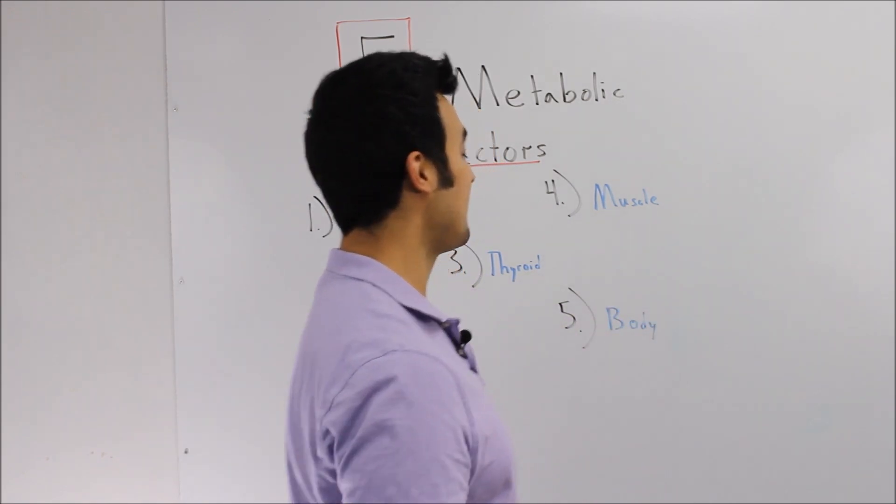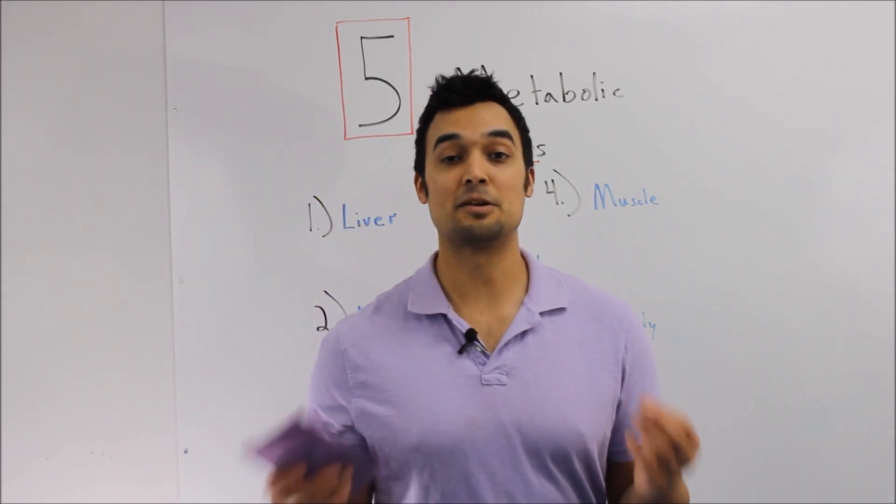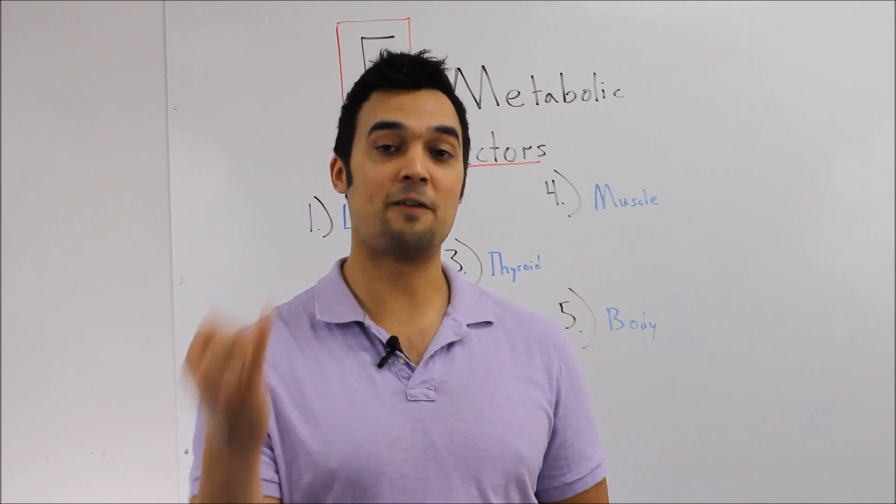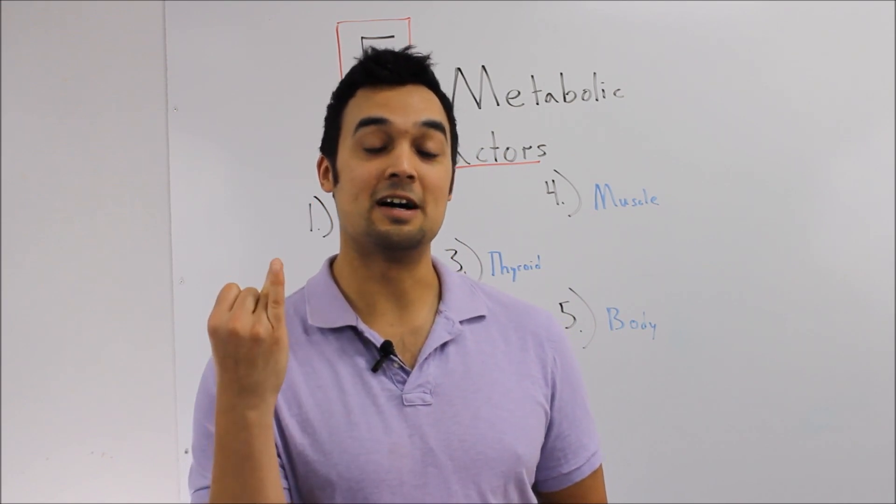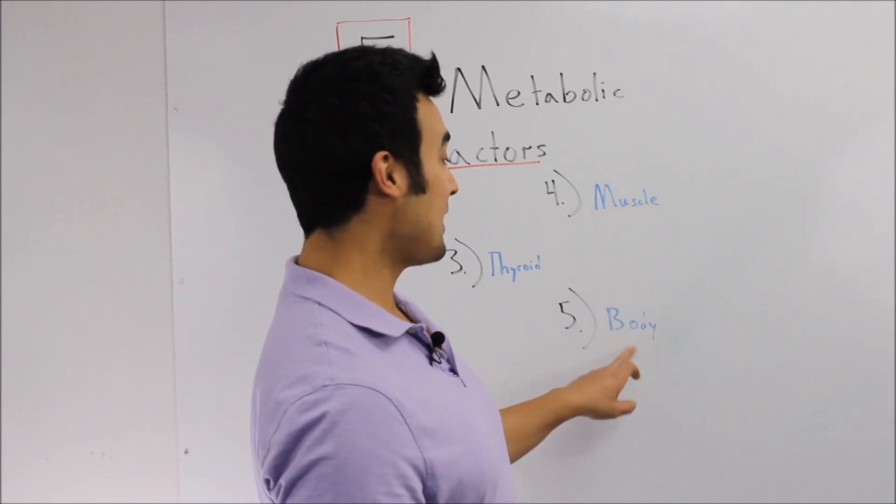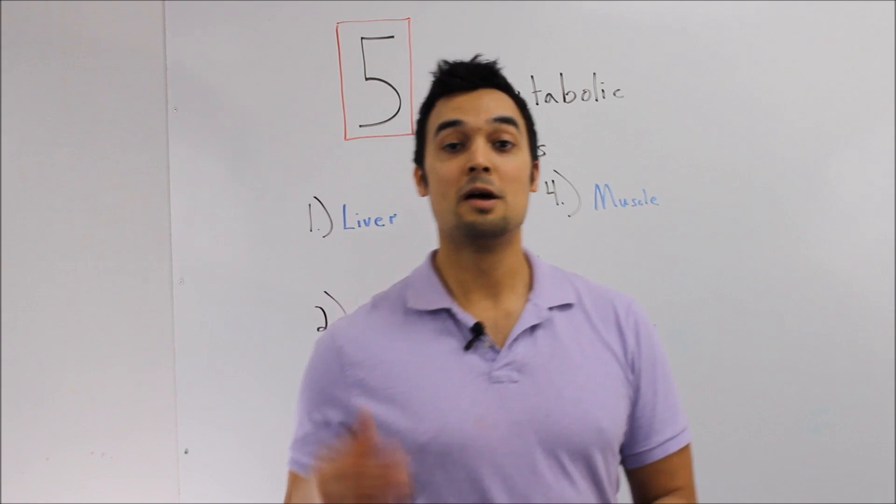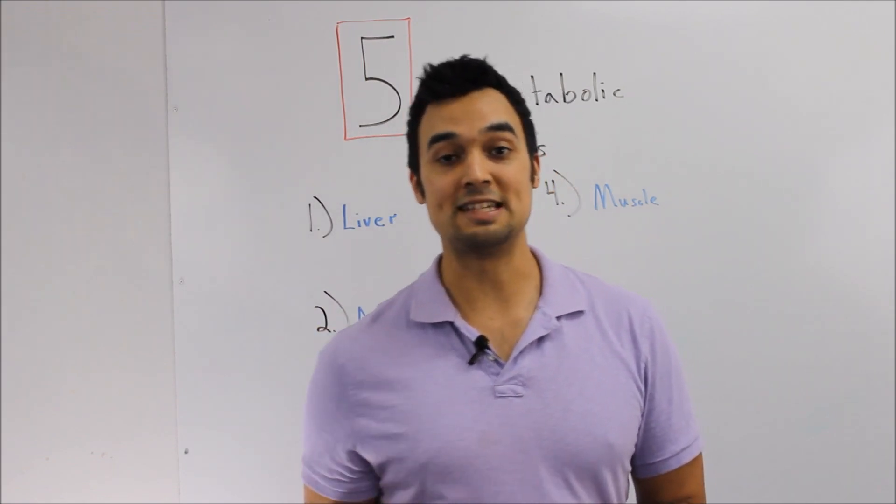Alright, last but not least, number five. And quite simply, this is your body. There are two types of bodies, a fat-storing body and a fat-burning body. And your body is a result of the four metabolic factors that precede it.